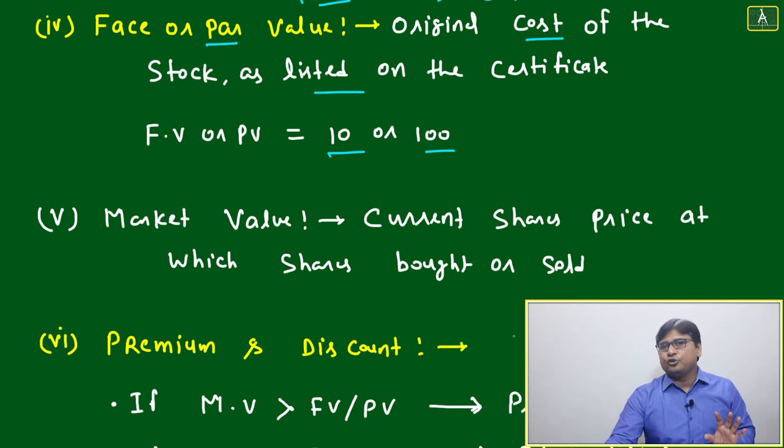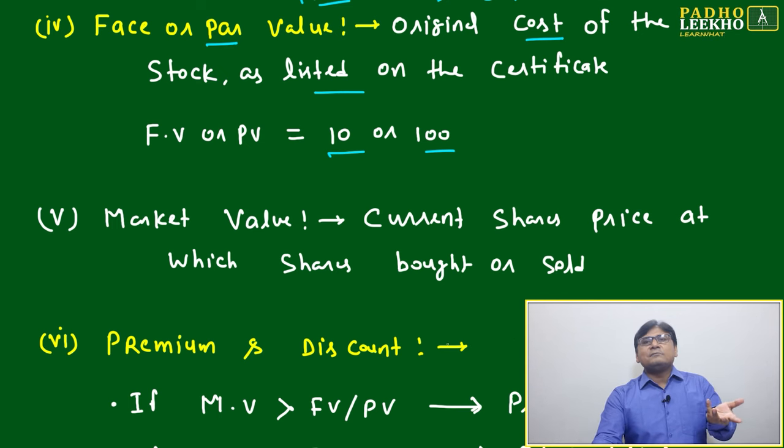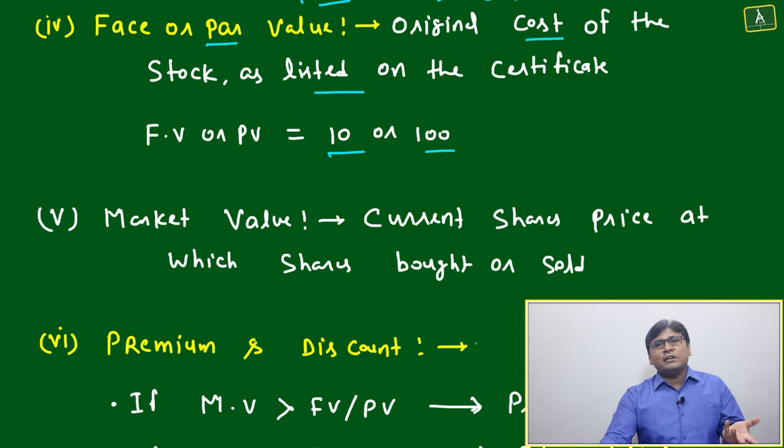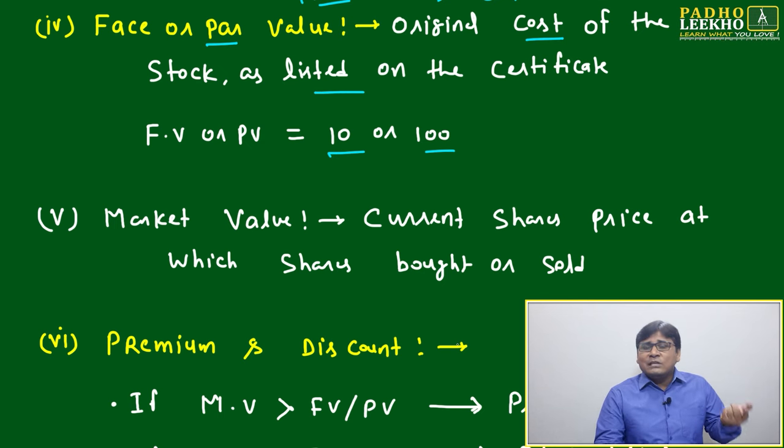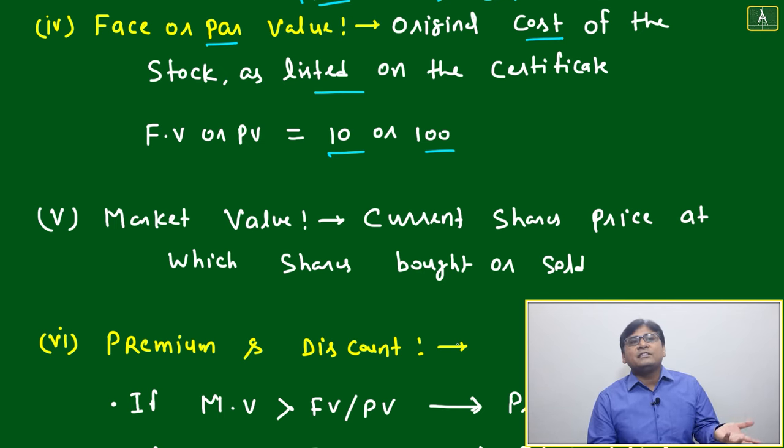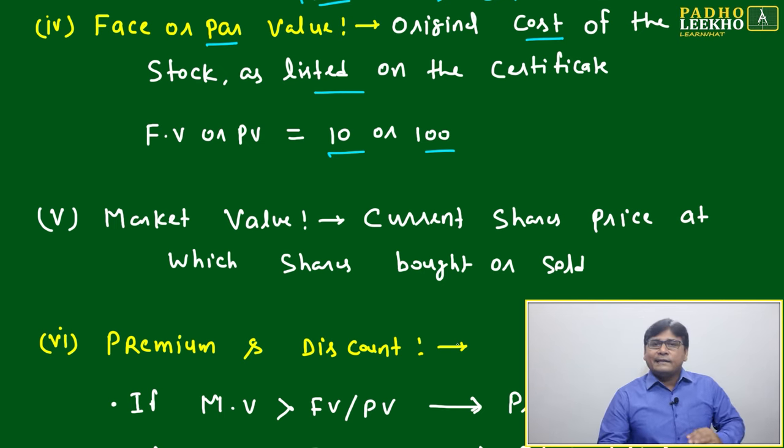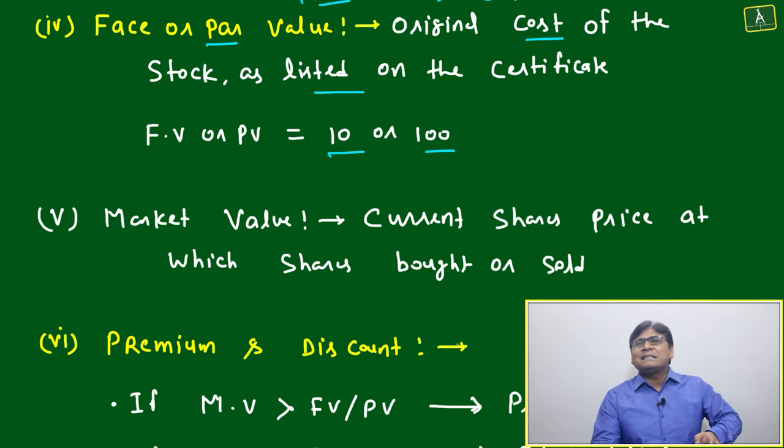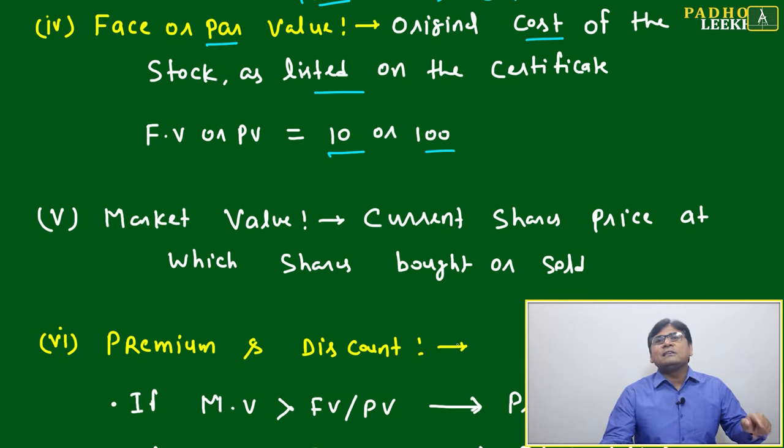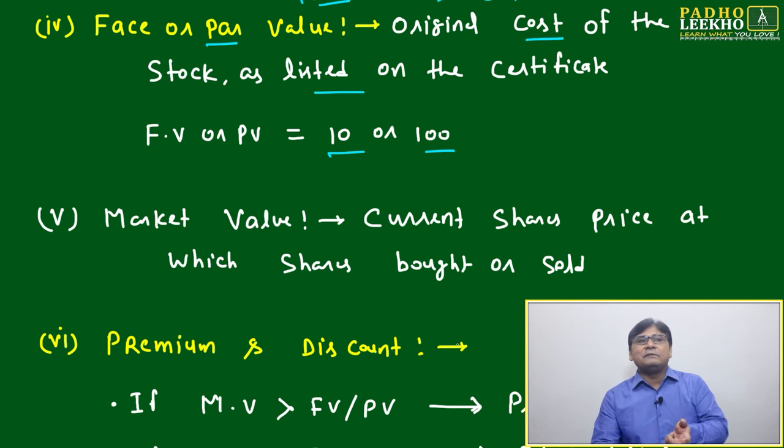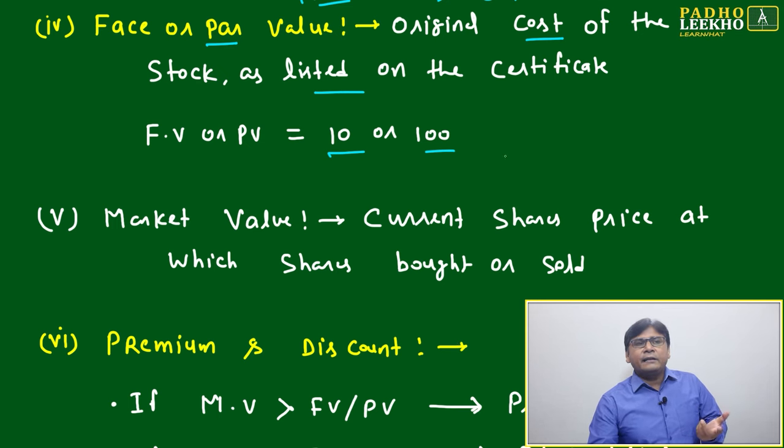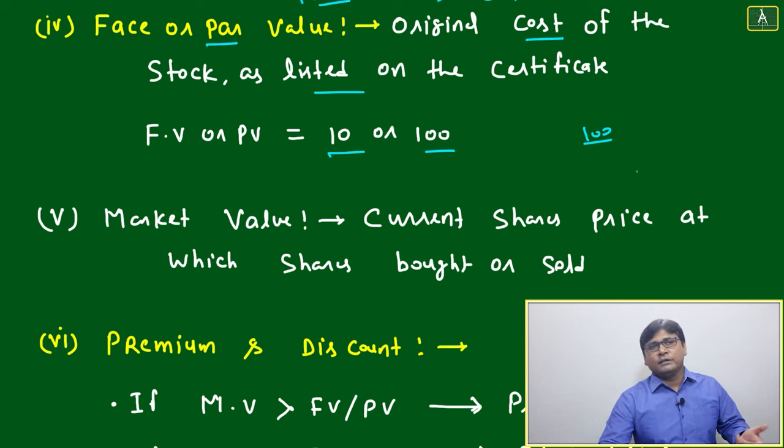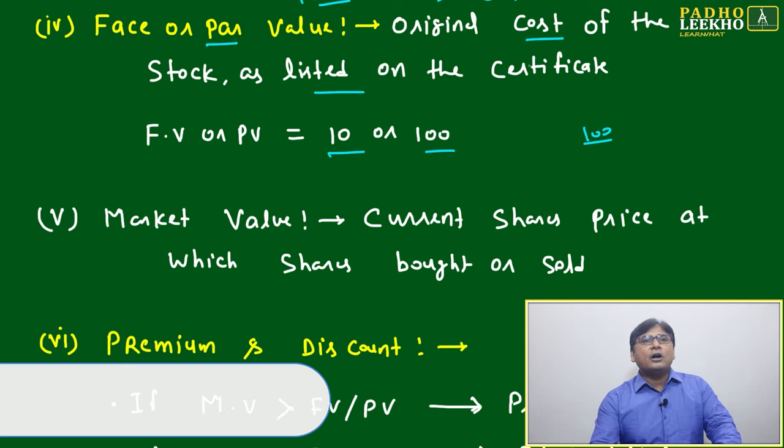Generally it will be 10 or 100 rupees. If any question doesn't mention the face value, you can take 100—there is no problem. 10 rupees also you can take, but calculation-wise 100 will be better and easier because all percentage calculations are based on 100. What is percentage? Percentage means calculation per cent, per cent, whatever your value is there. This 10 or 100, anywhere you want, you can assume 100 and solve the questions.